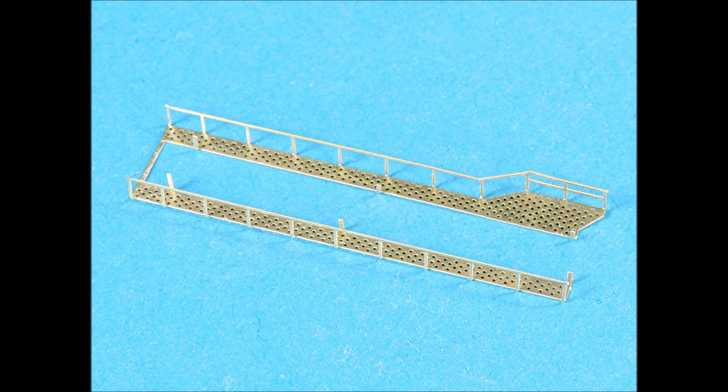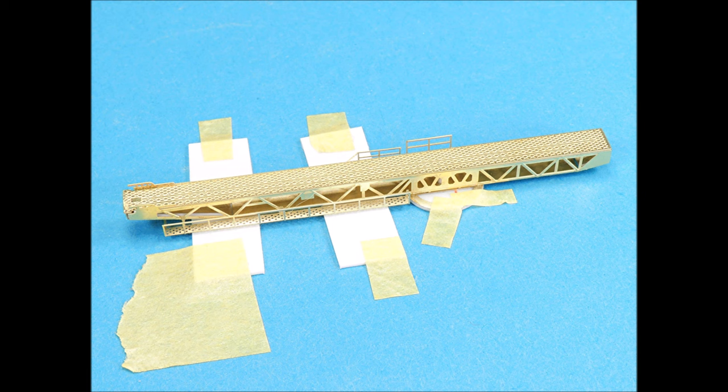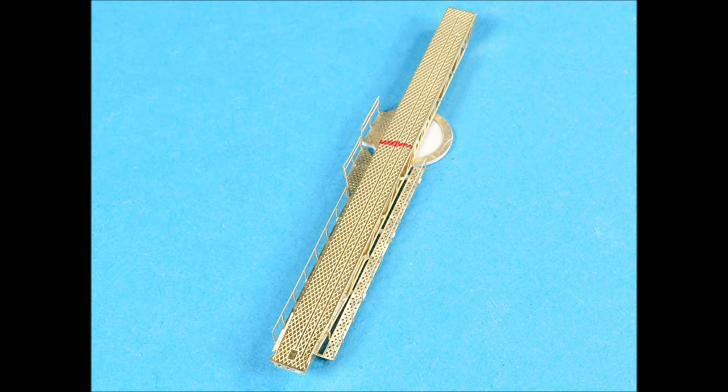The forward catapult catwalks were shaped first. The railings were bent up first, then the positioning stubs were bent. The forward catwalk was positioned and superglued into place with tiny drops of superglue applied with a .012 inch diameter wire applicator. Note the positioning of the forward catwalk with respect to the end of the catapult. This positioning is important.